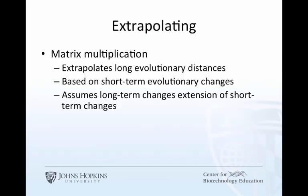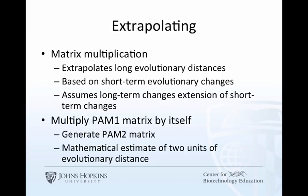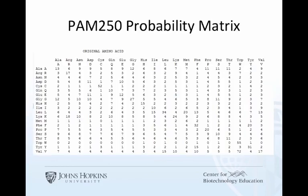After we construct the PAM1 matrix, the idea is to extrapolate that 1% change over longer distances of time, and we can use matrix multiplication to do that. The idea is that long-term changes of amino acids are based on short-term changes — it is an assumption. We multiply the PAM1 matrix by itself: PAM1 times PAM1 equals PAM2, which is a mathematical estimate of 2 units of evolutionary distance. If we do that 250 times, that's 250 units of evolutionary change. We can't measure 250% change directly, but we can do 1% change and extrapolate to 250 units.